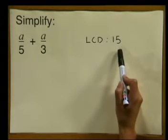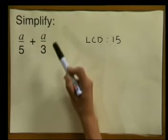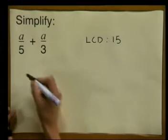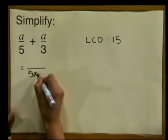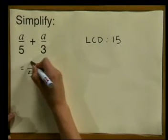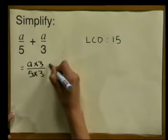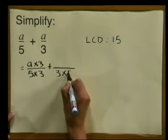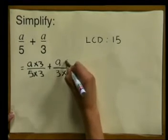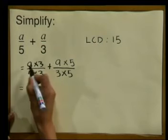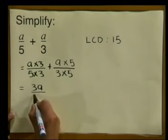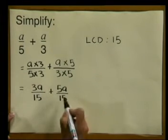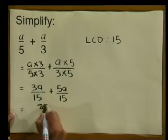I want 15 in both denominators, but I cannot merely change the denominators without doing the same to the numerators. What did I do to 5 to give us 15? I multiplied it by 3. So we write 5 multiplied by 3. Now we need to keep the numerator the same, so we multiply a by 3. Now we add. What did I do to the 3 to give me 15? I multiplied it by 5, so we've got 3 multiplied by 5. Now we do the same to the numerator, so we say a multiplied by 5. The numerator will be 3a all divided by 15, plus 5a divided by 15. And now that we have like fractions, we can add, and we get 8a divided by 15.